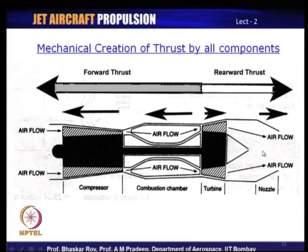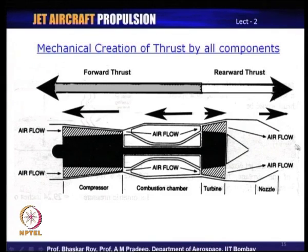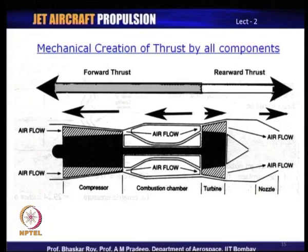Similarly in the nozzle, where pressure continuously falls as flow expands, the force experienced inside the body of the nozzle is likely to be rearward. As the flow exits, the reaction force from the jet is the forward thrust. When you add all the forward and rearward thrusts together, the sum gives the net forward thrust that makes the aircraft fly.